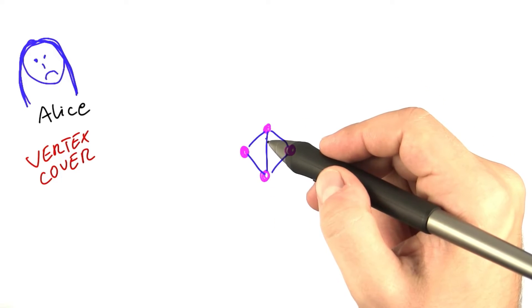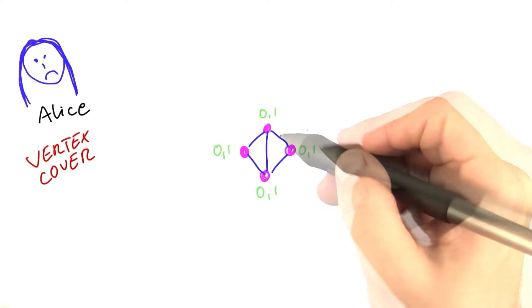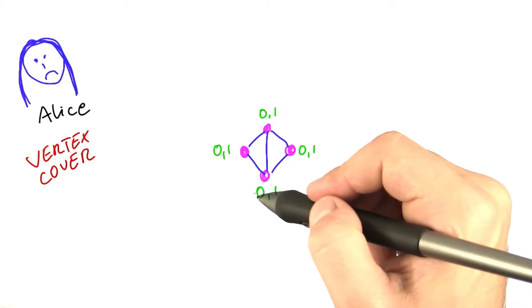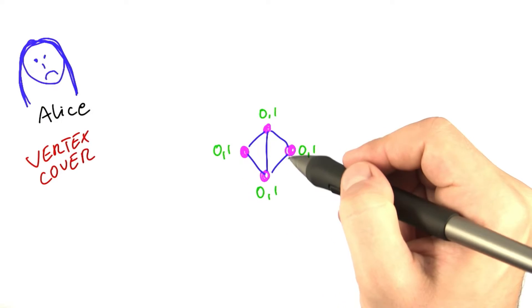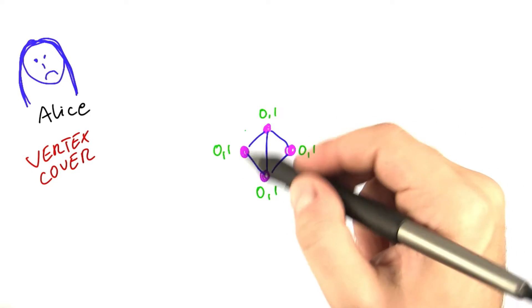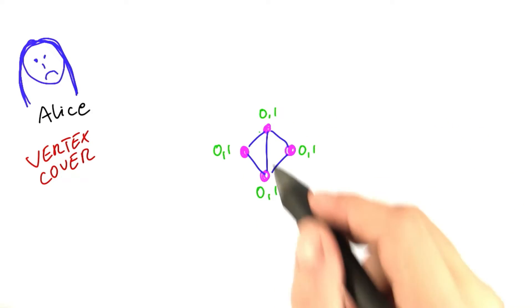What her simple algorithm, or brute force algorithm, was doing, it was considering all possible assignments of 0 and 1 to the vertices. So, for four vertices, we had a total of 16 possibilities that her algorithm needed to look at.